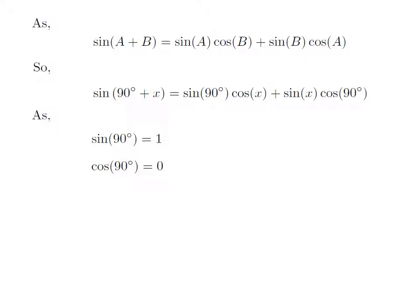As we know, sine of 90 degree is equal to 1 and cosine of 90 degree is equal to 0.